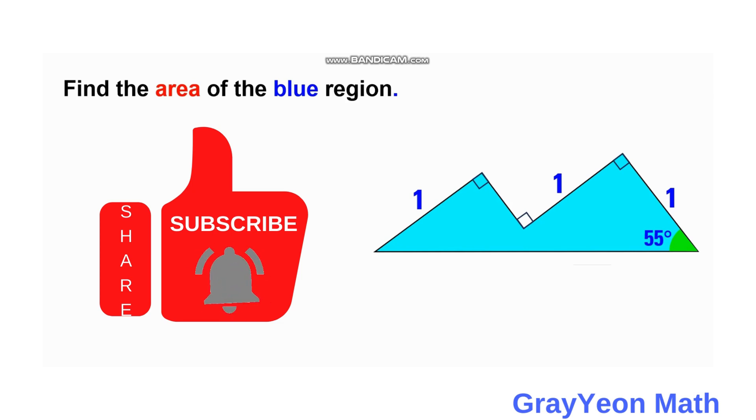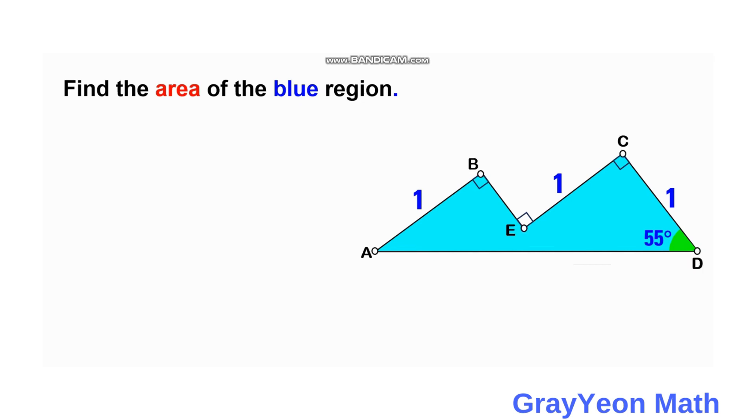Welcome to GrayYeon Math. We are asked to solve this problem. We have a concave pentagon because it has five sides, but one of the interior angles is greater than 90 degrees. One angle here at this point is 55 degrees. We are required to find the area of this blue region, this blue pentagon. The lengths of some sides of this pentagon are one unit.